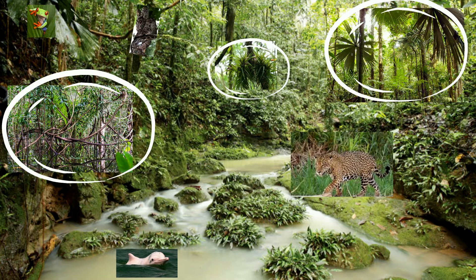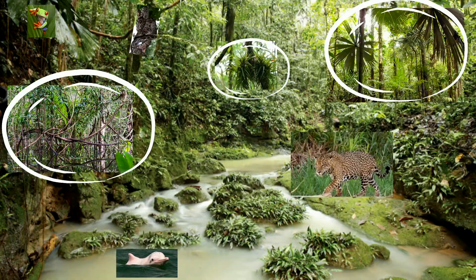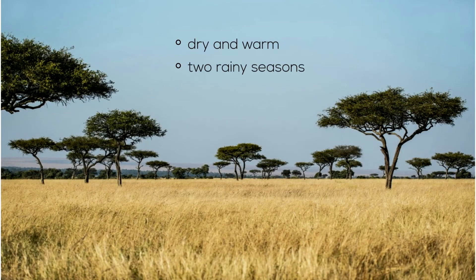Now, let's go to a different part of the world. Let's go to the African plains. The plains are dry and warm, but there are two rainy seasons that allow the plants to grow.